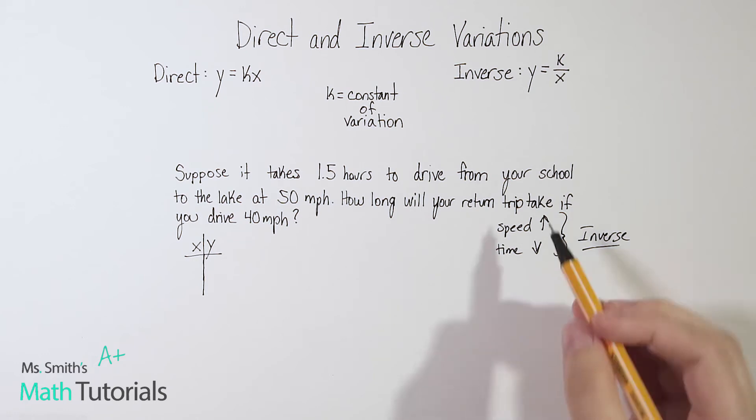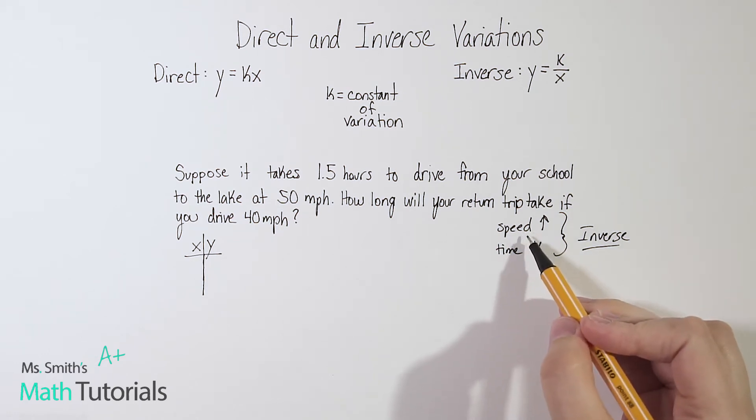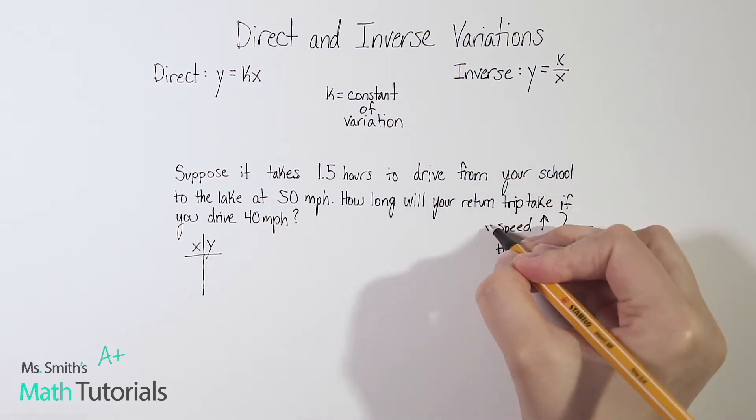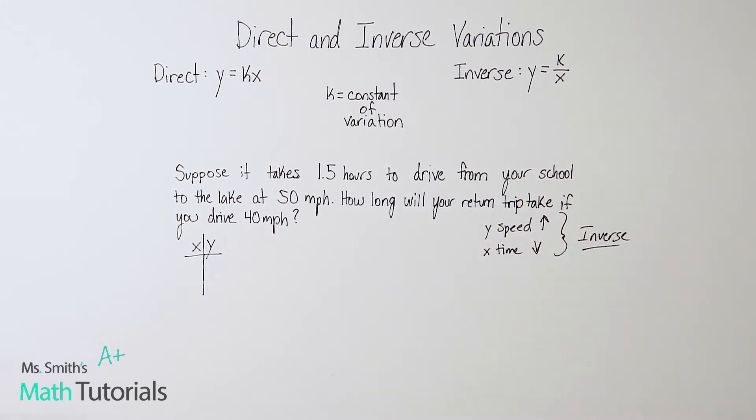Now, some of you may have been wondering, I immediately said that speed was going to be y, and time was going to be x. And you may be thinking, well, how did you decide that? Well, I always say x is not always time, but time is always x. Okay, any time that you have months, days, years, hours, minutes, seconds, any type of time passing, that's going to be your x value, your independent variable. So if I see anything with time, I know that's my x.